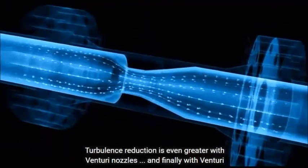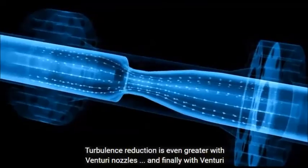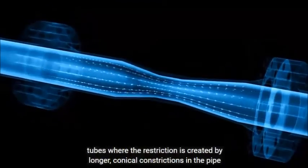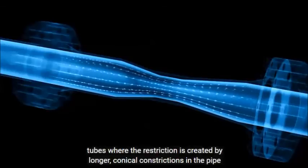Turbulence reduction is even greater with venturi nozzles and finally with venturi tubes where the restriction is created by longer conical constrictions in the pipe wall.